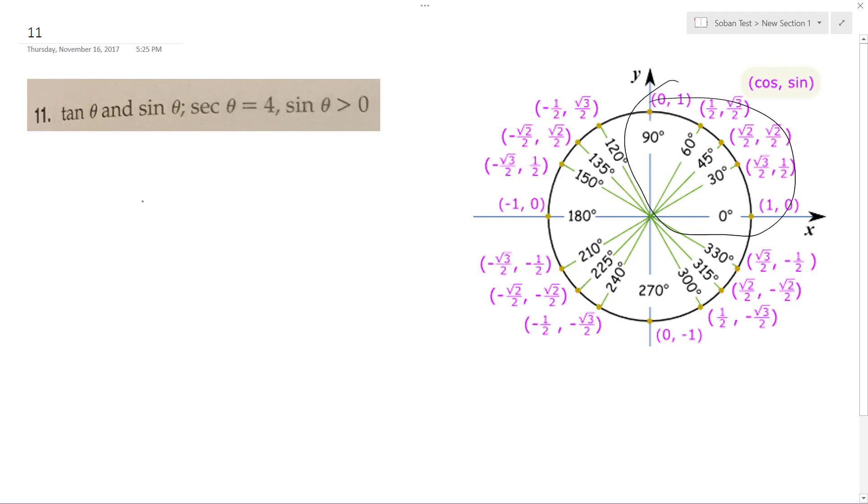All right, so I know this so far. This has to be one, because the inverse of this is one over four, so this is four. So this ends up being square root of 15, because four squared minus one squared is 15 squared. Can't get a clean number out of that.